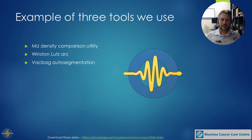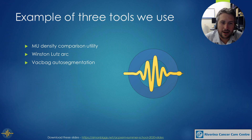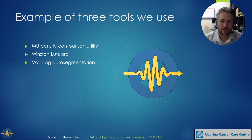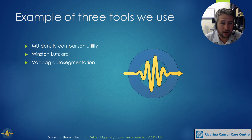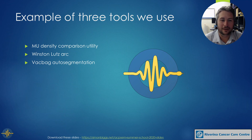I want to provide you with three examples of tools that we use in our clinic. We've got an MU density comparison utility, a Winston-Lutz arc tool, and a VAC bag auto-segmentation tool. All of these are available within PyMedViz — you can download them and use them yourself. They are optimized for use here, and I'd certainly appreciate people helping to make them easier to use at other clinics.